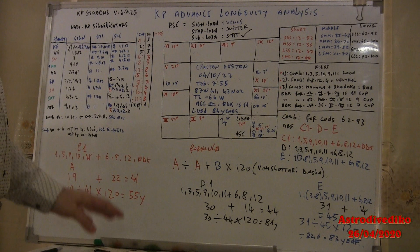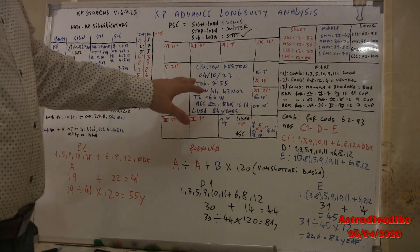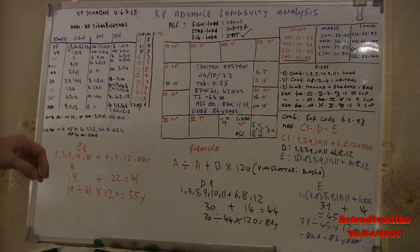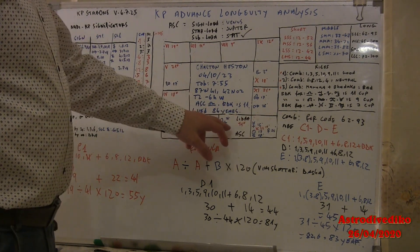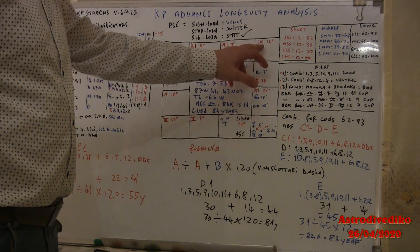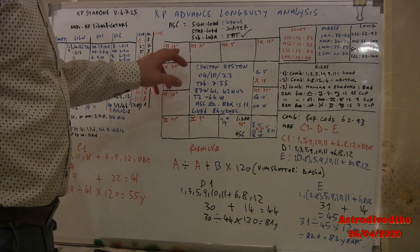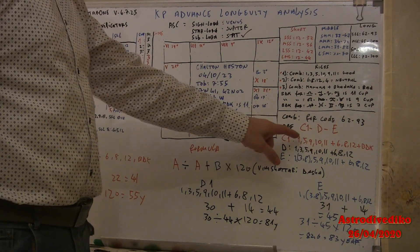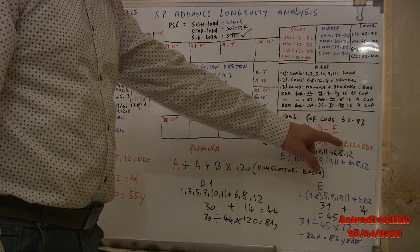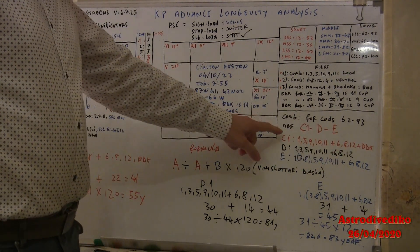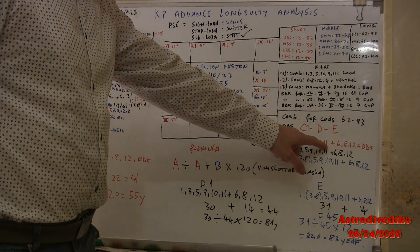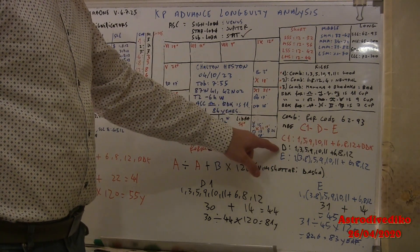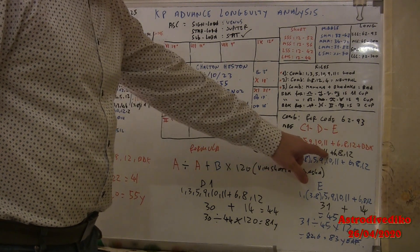Now how does this work? As I said before, the code in the first step of Charlton Heston longevity is from 60 to 93, so we must use the code C1. Because the ascendant is not a dual sign Gemini, Virgo, Sagittarius, Pisces, it's a cardinal sign, so we use the formula C1, D, and E. C1 is 1, 5, 9, 10, 11 plus 6, 8, 12 plus Badaga. For C1 you must not use the Badaga planet, only 1, 5, 9, 10. Instead, for the combinations of D and E, you use, you count also the Badaga planet.